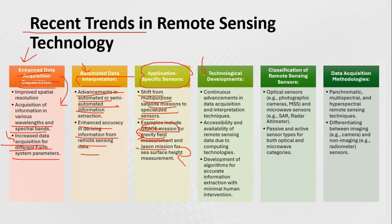There have also been many technological developments, including continuous advancement in data acquisition and interpretation techniques, improved accessibility of remote sensing data due to computing technologies, and development of algorithms for accurate information extraction with minimum human intervention. There are also different types of remote sensing sensors — in optical sensors we have photographic cameras and MSS, and in microwave sensors we have SAR, radar, and altimeters.